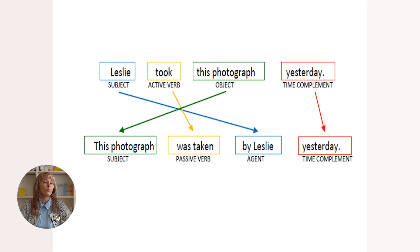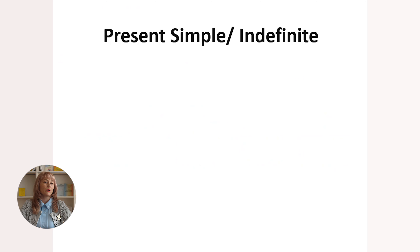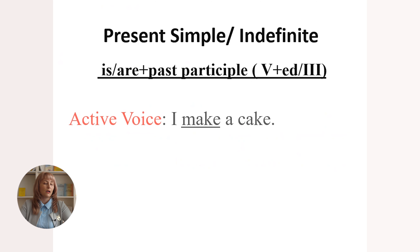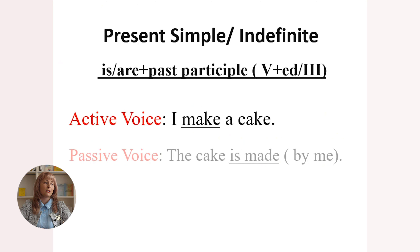Now let's study each passive tense separately. Let's start with present simple, or present indefinite. Present simple in passive voice is formed with 'is' or 'are' plus the past participle — the '-ed' ending or the third form of the irregular verb. Active voice example: 'I make a cake.' In passive voice: 'The cake is made by me.'